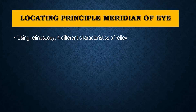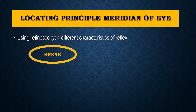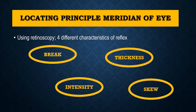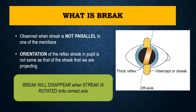To locate the principal meridians of the eye, this can be done using retinoscopy with four different characteristics of the reflex: the break in the reflex, the thickness of the reflex, the intensity of the reflex, and the skew of the reflex. You can remember these using the mnemonic BITS — B for break, I for intensity, T for thickness, and S for skew.